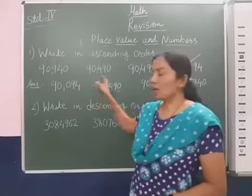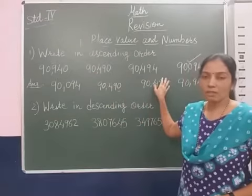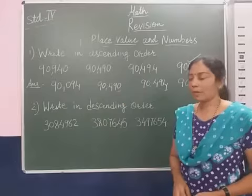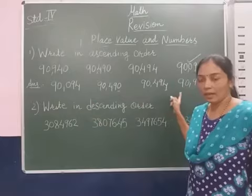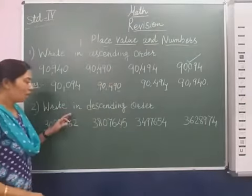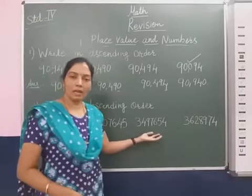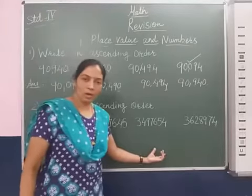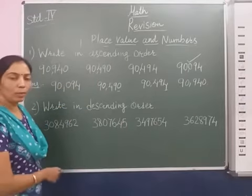So this is the key point: when numbers are given and we have to arrange them in ascending order, we observe the highest place value. If it is similar, like in this question, we compare the next digit. We write the smallest number first, then the greatest number last — smaller to greater is ascending order. Now for descending order, it is the opposite of ascending — we take the greatest number first, greater to smaller. But before that, we have to put the commas.